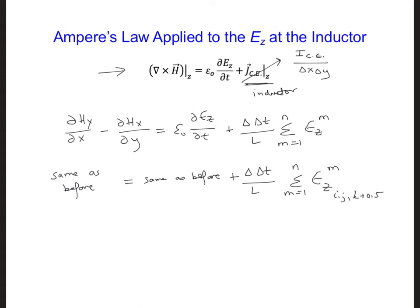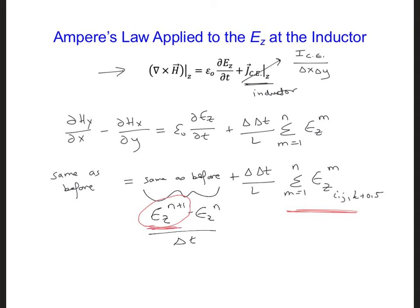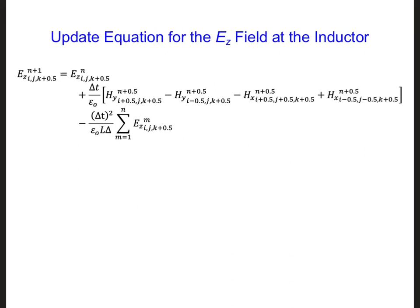Solving for the future value of ez is going to be easier in this case because there is only one future ez component, and that's going to be right here — ez n plus 1 minus ez n over delta t. This is the only future value of ez. Over here, this is all previous values of ez at previous time steps. So when we solve for the future value of ez, all we need to do is move this one term to the left side and move all the other terms to the right side. In the end, we get this update equation for the ez component at the inductor.